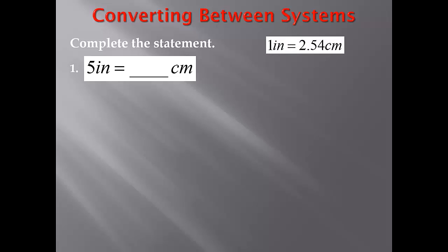Our conversion factor tells us that one inch equals 2.54 centimeters. We're going to use this conversion factor to help us solve the problem. So now if we look at our original problem, we're starting with five inches. I'm going to write five inches and make it a fraction, so I need to write a one in the denominator.